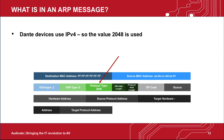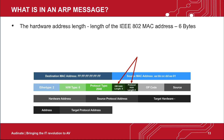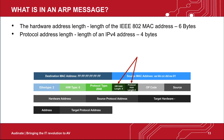Next, we have the protocol type. This complements the hardware type and is used to describe which layer 3 address scheme we're using. Dante devices use IPv4, so the value 2048 is used. The hardware address length refers to the length of the IEEE 802 MAC address — in this case, 6 bytes. And the protocol address length refers to the length of an IPv4 address — in this case, 4 bytes.